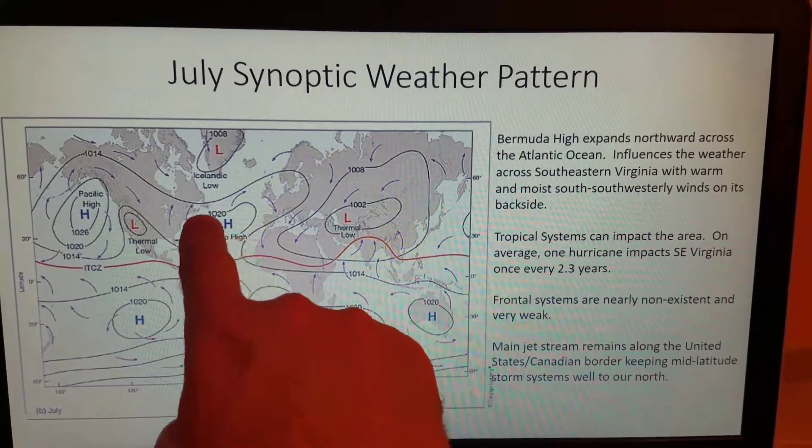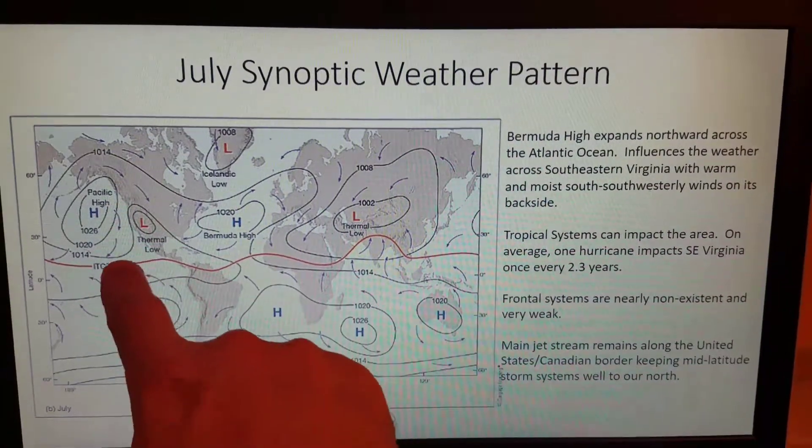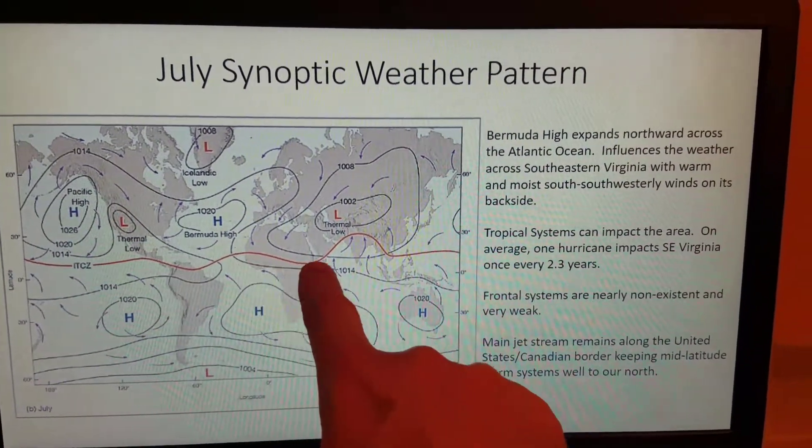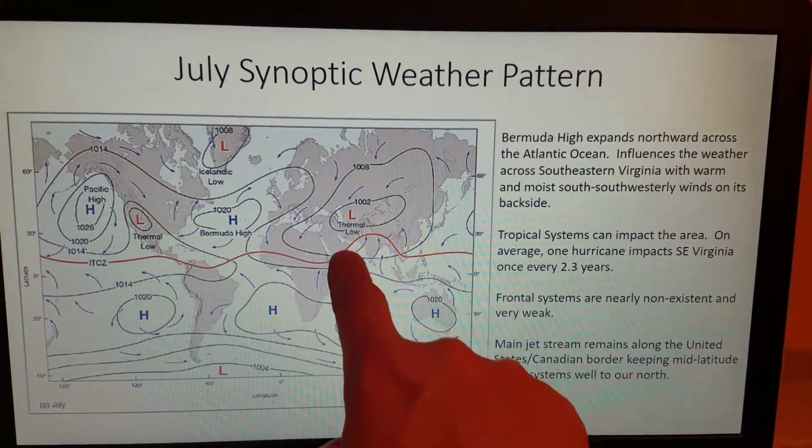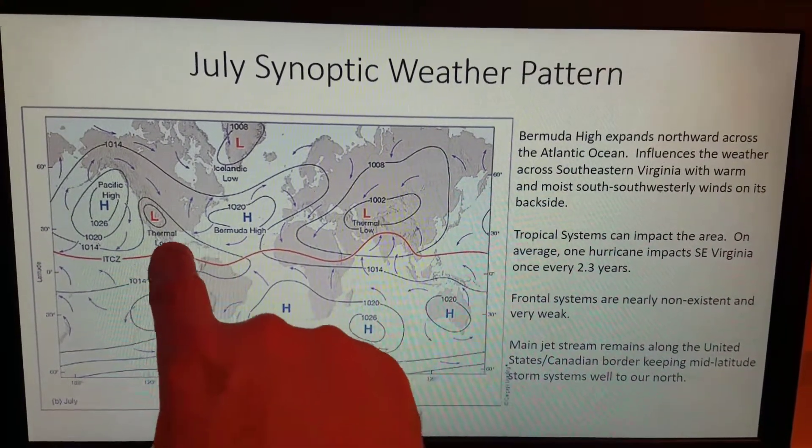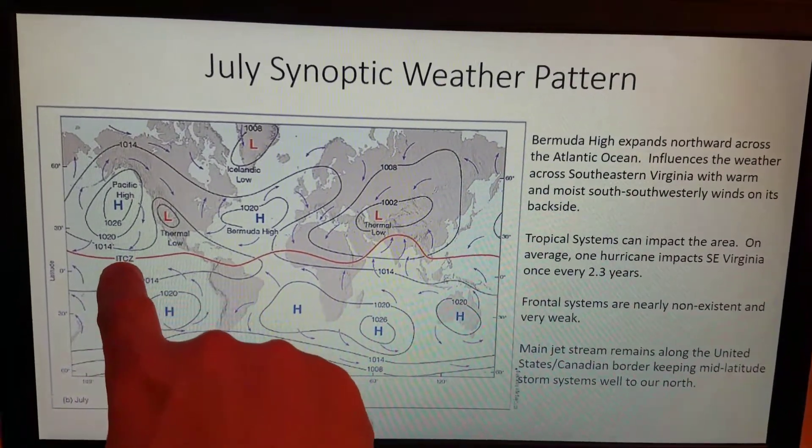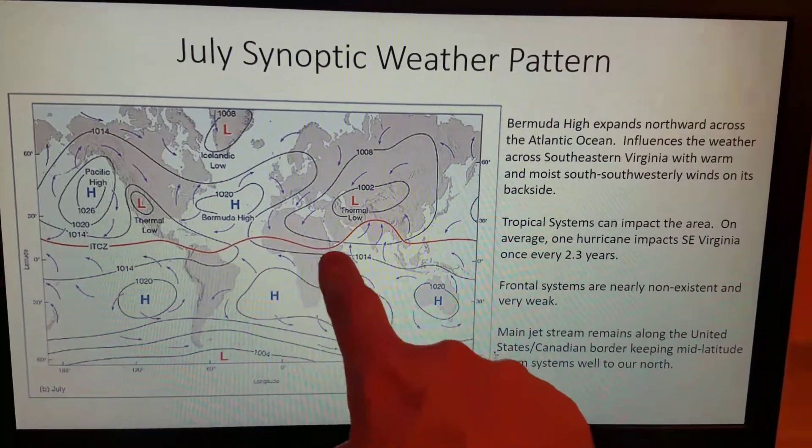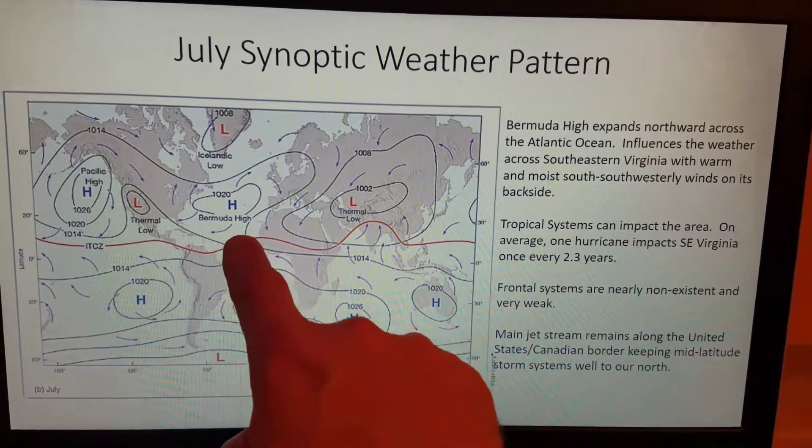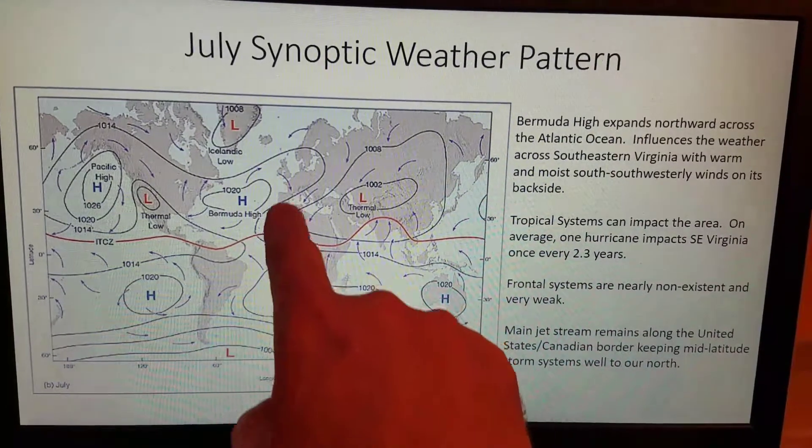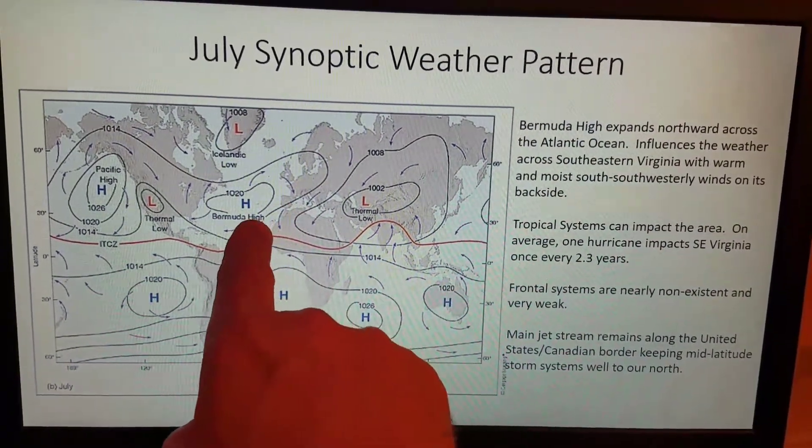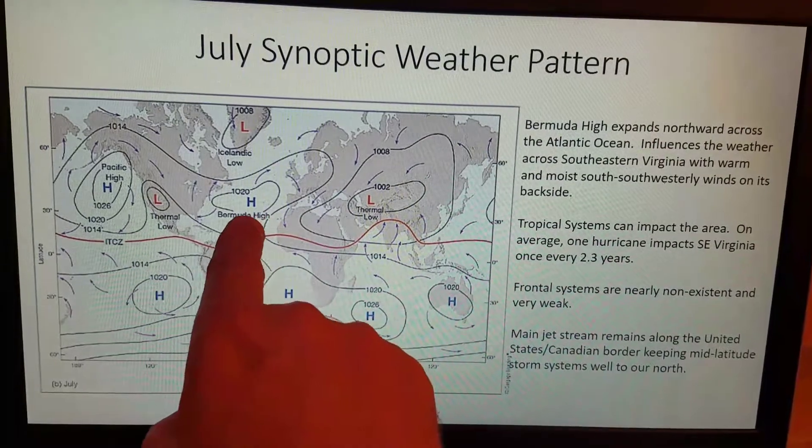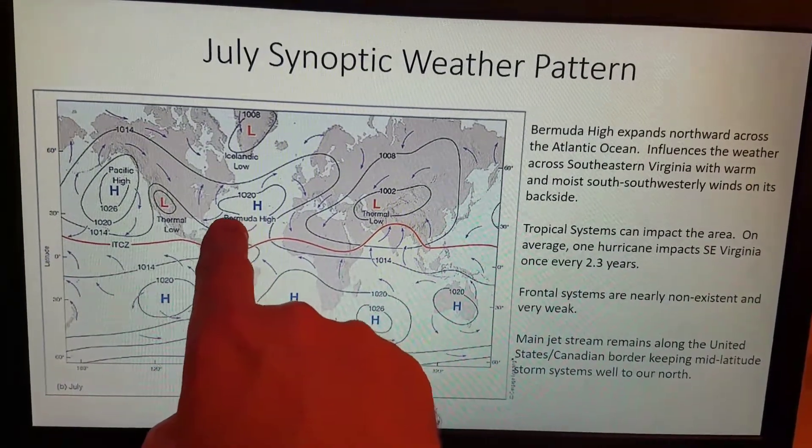The high is very expansive this time of year and this red line down here in the equatorial regions represents the area where air rises and converges and along this ITCZ or intertropical convergence zone, that is an area where tropical systems tend to form and develop.